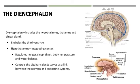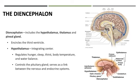Moving into the diencephalon, which includes the hypothalamus, thalamus, and epithalamus (made up of the pineal gland and habenular nucleus). The hypothalamus is a triangular area known as our integrating center — it regulates hunger, sleep, thirst, body temperature, and water balance. It also creates releasing and inhibiting hormones to direct the pituitary gland, serving as a link between our nervous and endocrine systems.